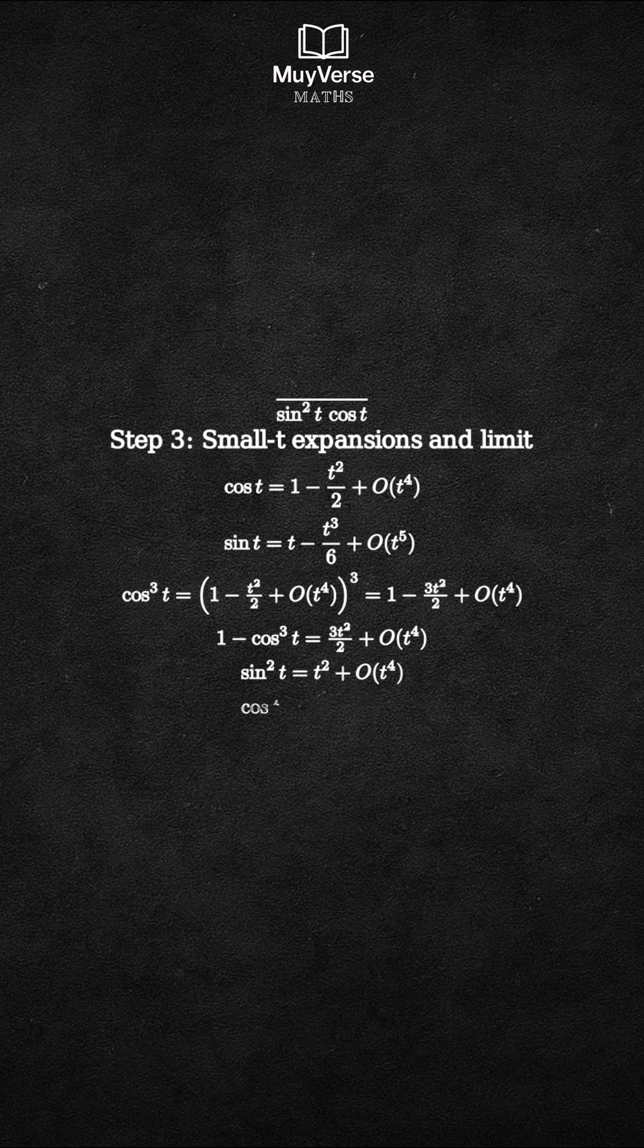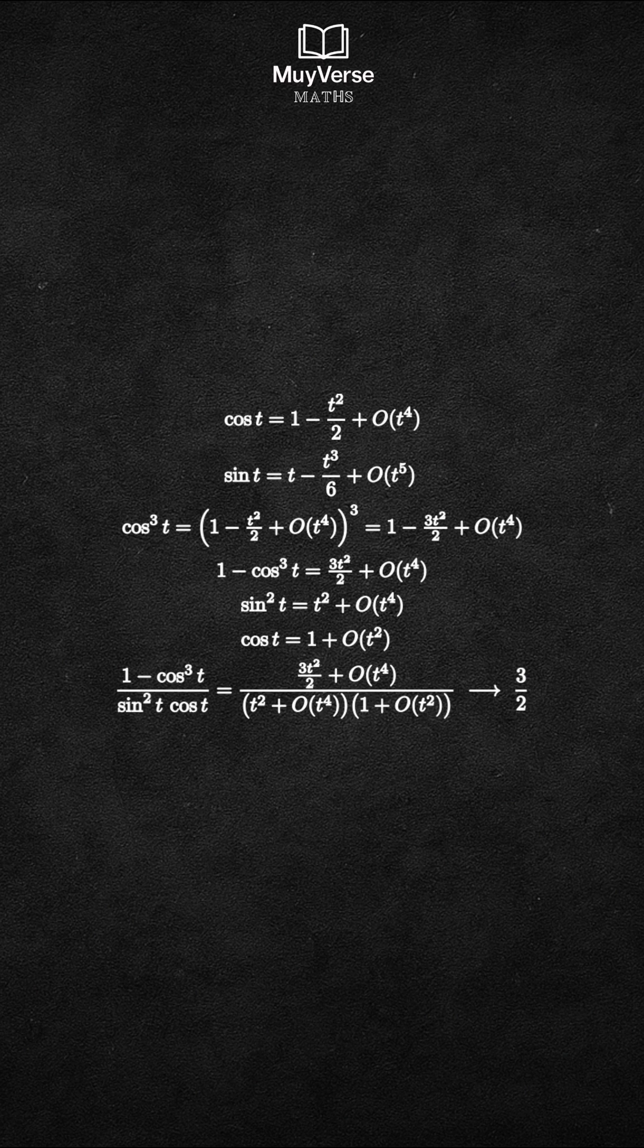Also, sin²t is approximately t², and cos t is approximately 1. Substituting into the fraction, the numerator is about 3t²/2, and the denominator is about t² times 1. So the ratio tends to 3/2.